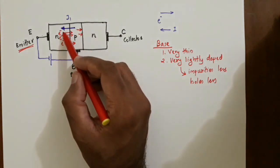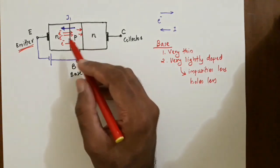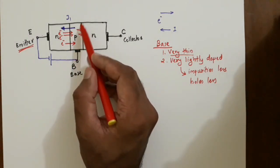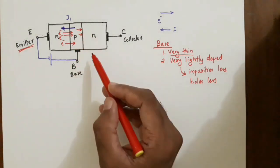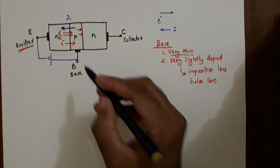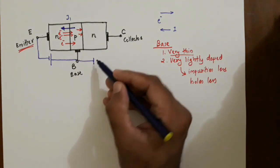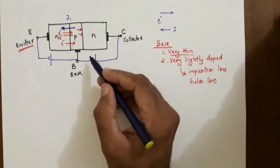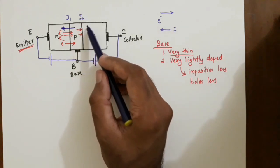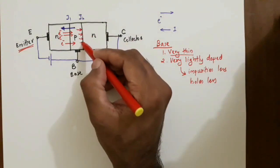Most of the electrons will not undergo recombination and will reach the other end of the junction. Additionally, these electrons arrive with some kinetic energy and high velocity. Since the base region is very thin, they quickly reach the other end. At that end, junction J2 is reverse biased — P is connected to the negative of the battery and N to the positive.